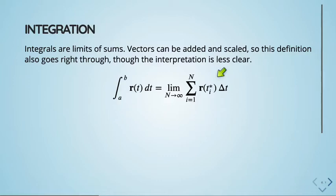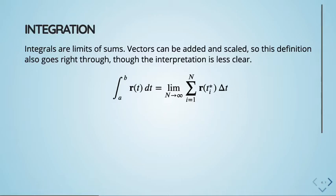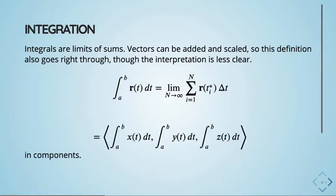In the Riemann sum, you're adding up: a value of the function (a vector) times Δt — scalar multiplication. You add it up and get a vector. If it's integrable, that limit exists. So the conclusion: if you want to integrate a vector-valued function, just integrate each component separately — integrate x, integrate y, integrate z. That easy.